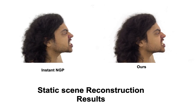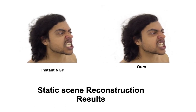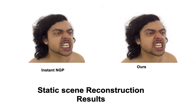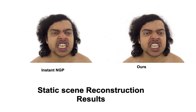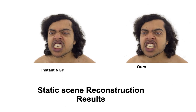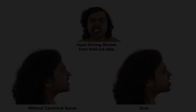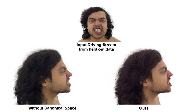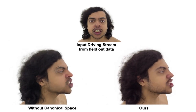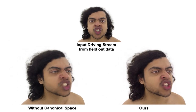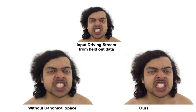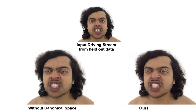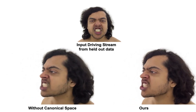We also show improvement over Instant NGP for reconstruction of a static scene. We observe that a model trained without using a canonical space leads to lower quality details.